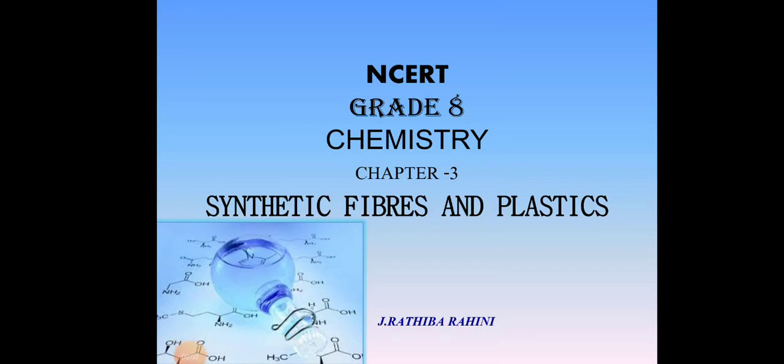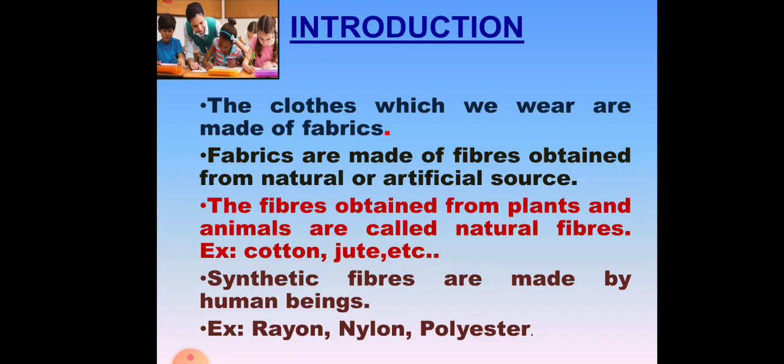Hello students, today we are going to learn the lesson Synthetic Fibers and Plastics in chemistry. The clothes which we wear are made of fabrics. Fabrics are made of fibers obtained from natural or artificial sources. The fibers obtained from plants and animals are called natural fibers — for example, cotton, jute, etc. Synthetic fibers are made by human beings — for example, rayon, nylon, and polyester.